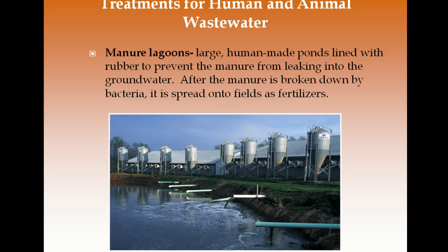Manure lagoons are giant ponds lined with rubber to hold animal waste and prevent it from seeping into groundwater. Bacteria are added to break down the organic waste, and once dried the material is turned into pellets for gardening or fertilizers. Pollution can occur when breaks appear in the liner, allowing waste to enter groundwater.